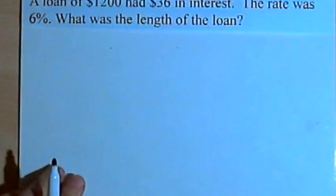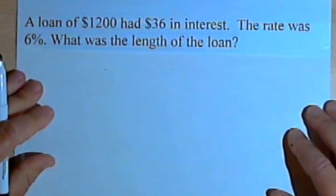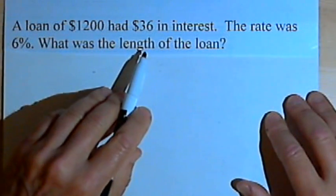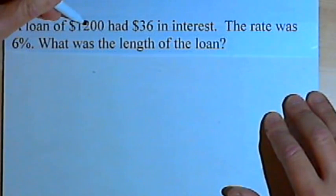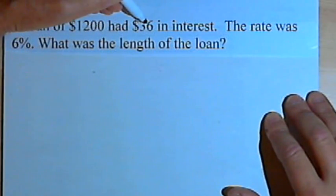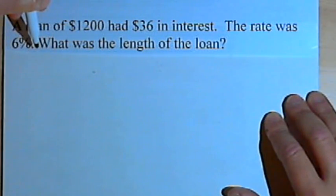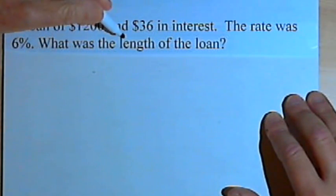And here's the last one. In this one we're looking for the time, the length of a loan. A loan of $1,200 had $36 in interest. The rate was 6 percent. What was the length of the loan?